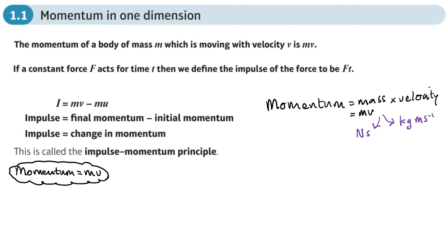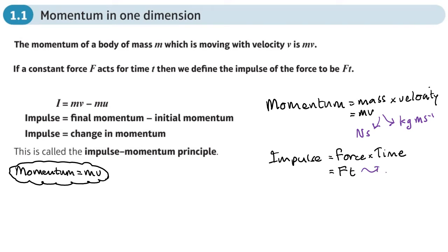There's also something called impulse. One way of working out impulse is force times time — you have a certain force acting on an object for a certain amount of time, shortened as F times t. If you think about the units: force is newtons, time is seconds, so that gives newton seconds, Ns.